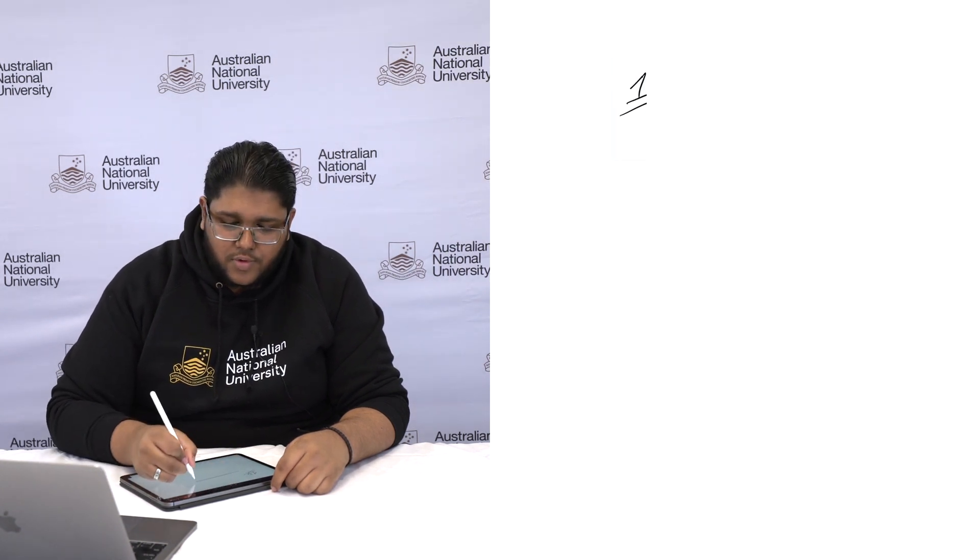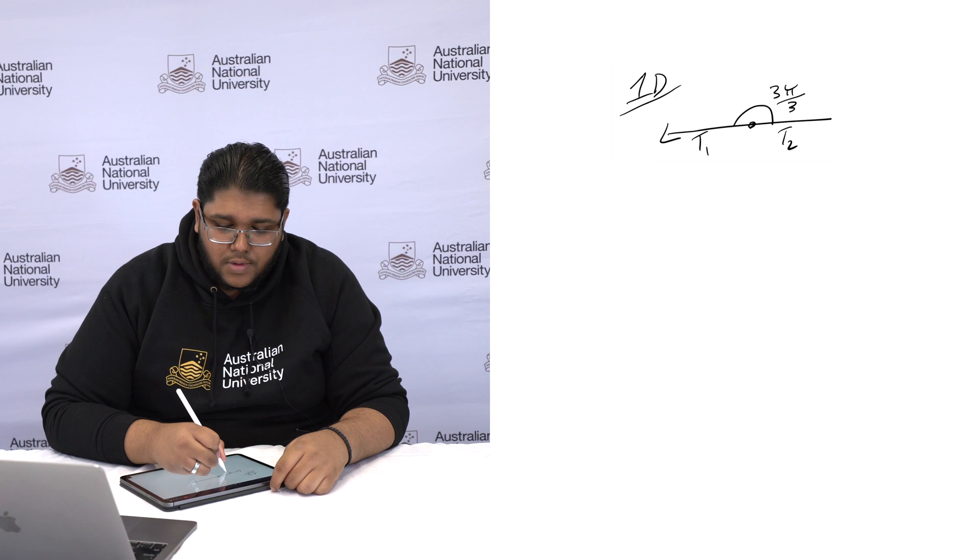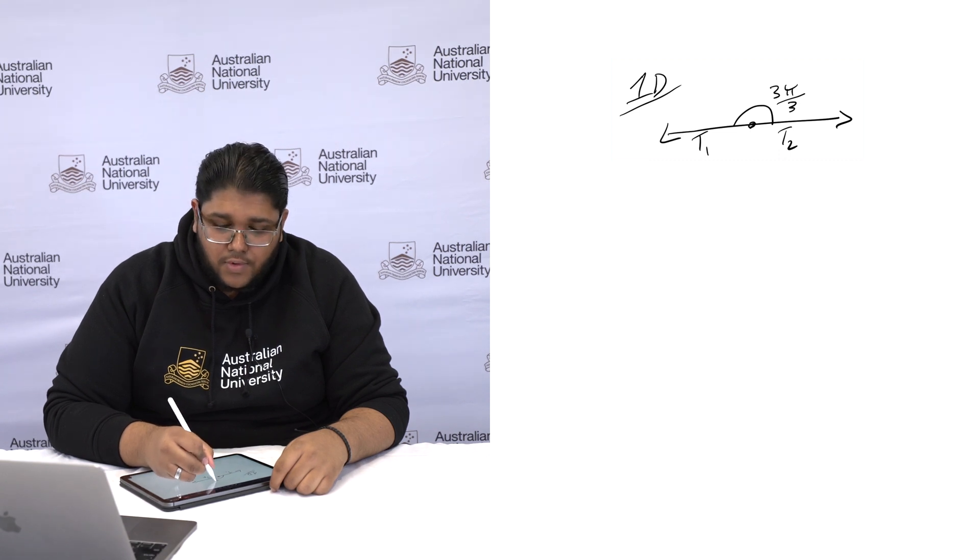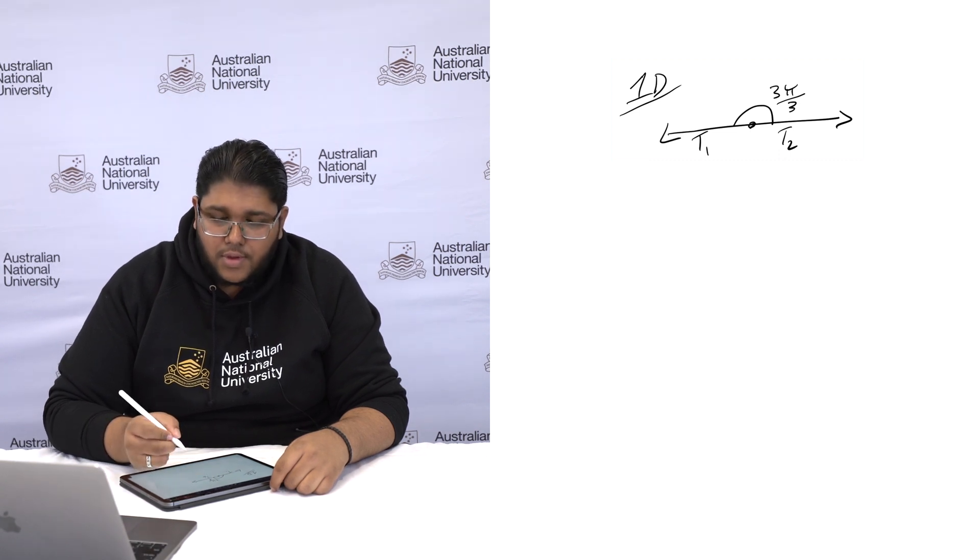In summary, in one dimension, the object would look something like this, where there are equal forces here and here. And this angle here would be 3 pi on 3.